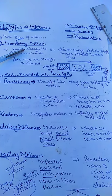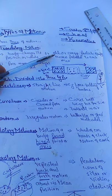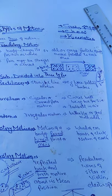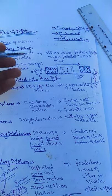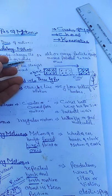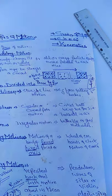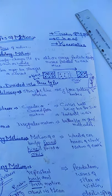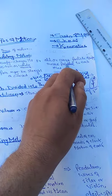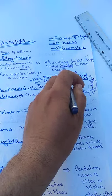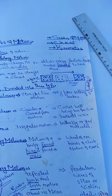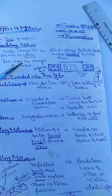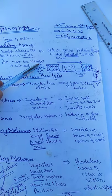Translatory motion is that type of motion in which a body changes its position as a whole, meaning every particle or object moves parallel to each other. In translatory motion, the object changes position completely - every particle moves in the same direction. All particles move parallel to each other, and the path of translatory motion may be straight or curved.